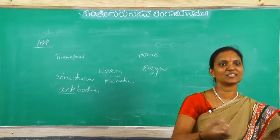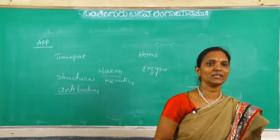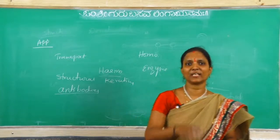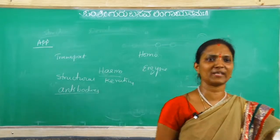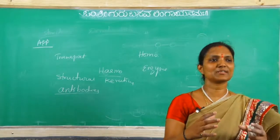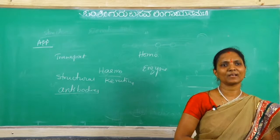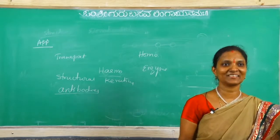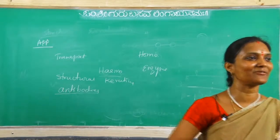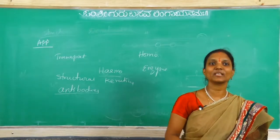Body pH around 6.8. At that condition only the enzyme is active. Enzymes are highly specific in nature - one enzyme can catalyze only one type of reaction. Many examples we already learned: for conversion of starch to glucose, amylase. To convert sucrose to glucose and fructose, invertase.